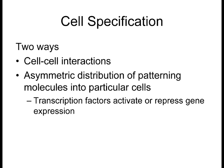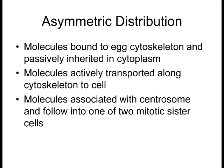Conditional specification is typically cell-cell interaction. Syncytial and autonomous specification use asymmetrical distribution of RNAs and proteins in the cytoplasm to begin activation of gene expression. There are three modes of asymmetrical distribution, usually done before fertilization. The first one is that molecules such as proteins or RNA are bound to the cytoskeleton and passively inherited in the cytoplasm.